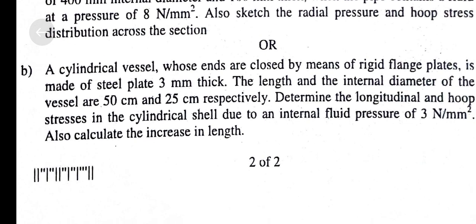Question B. A cylindrical vessel whose ends are closed by means of rigid flange plates is made of steel plate 3mm thick. The length and internal diameter of the vessel are 50cm and 25cm respectively. Determine the longitudinal and hoop stresses in the cylindrical shell due to an internal fluid pressure of 3 N/mm². Also calculate the increase in length.